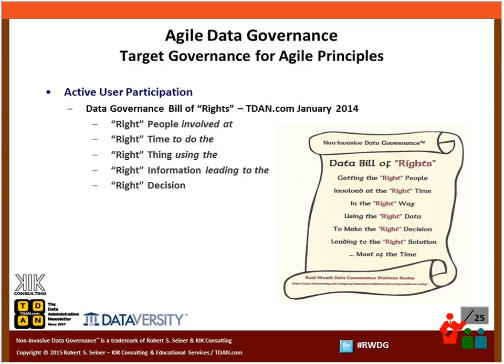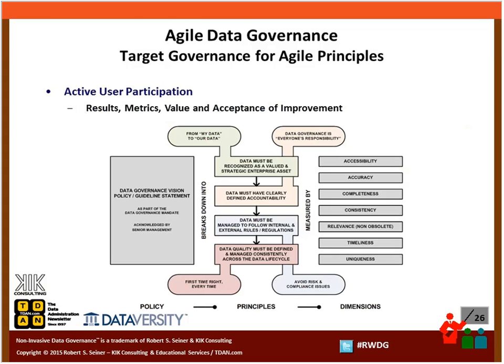The Data Governance Bill of Rights was published on TDAN in January of 2014. It talks about getting the right people involved at the right time to do the right thing, leading to the right decision — with the idea of getting to the right decision as high a percentage of the time as possible. Data governance is really all about that Bill of Rights. We need to have active user participation through all the steps of the agile delivery methodology, and that's one of the ways of applying governance to agile methods.